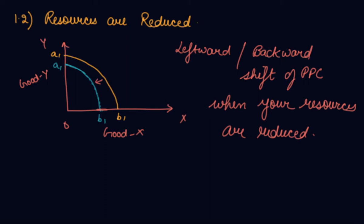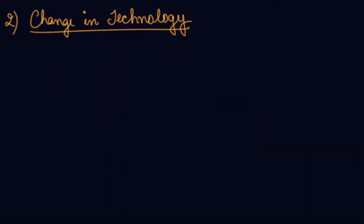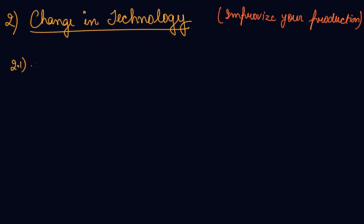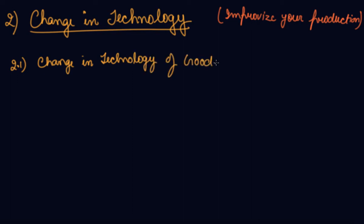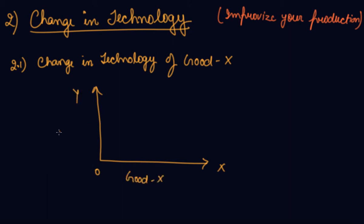Now let's look at change in technology. You change your technology to improve your production. So if there is a change in technology, number one is a possible case: the change in technology of good X only. If you are only changing the technology to produce good X, let's see how the PPC will be affected. This is your good X, this is your good Y, and this is your initial PPC.